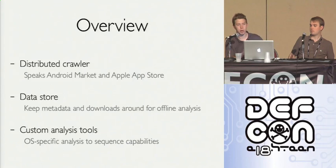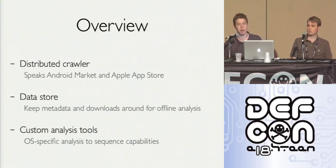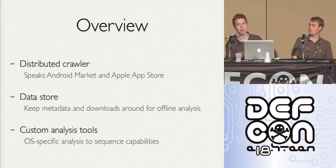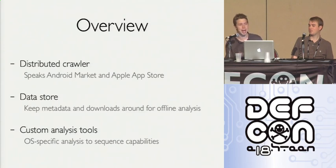How did we build it? We built a distributed crawler that speaks Android and iPhone. It communicates with each app store over its native protocol and interacts with it the same way you'd download something on your device. We tried running this in a single thread originally — downloading every mobile app in the world in a single thread takes a very long time — so we distributed it out. We're storing everything we get so we can look at trends over time and do offline analysis. When we find a new phone vulnerability, we can quickly check if anyone in the wild is vulnerable or exploiting it.